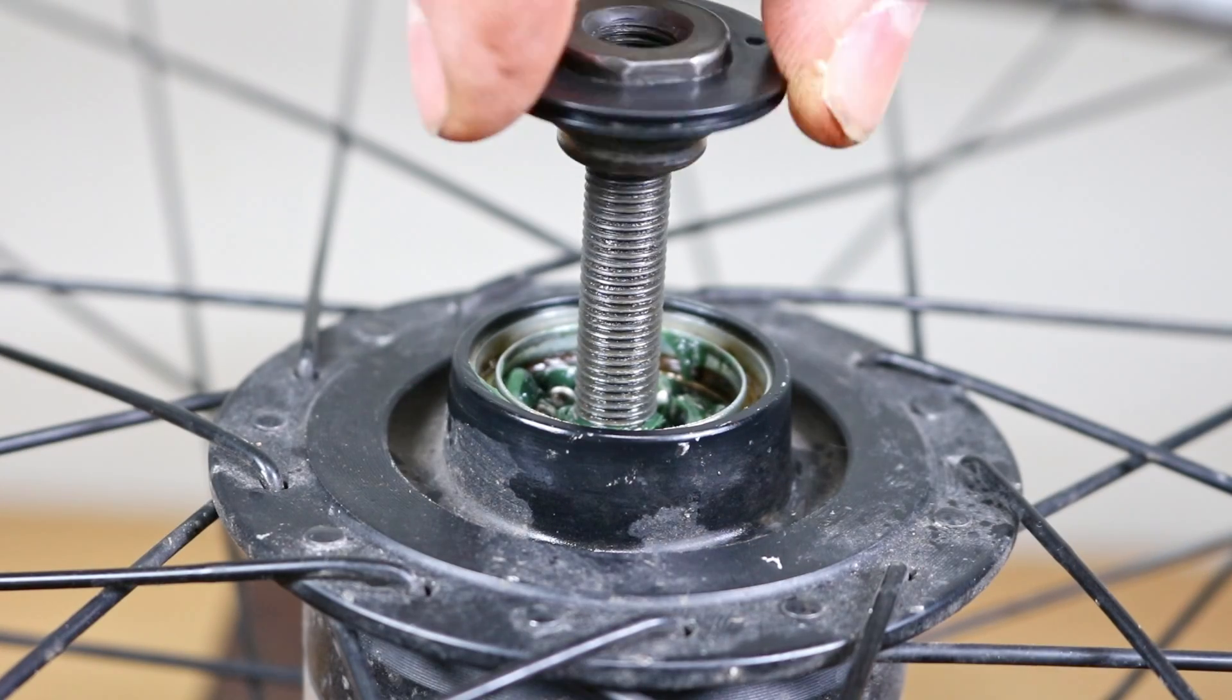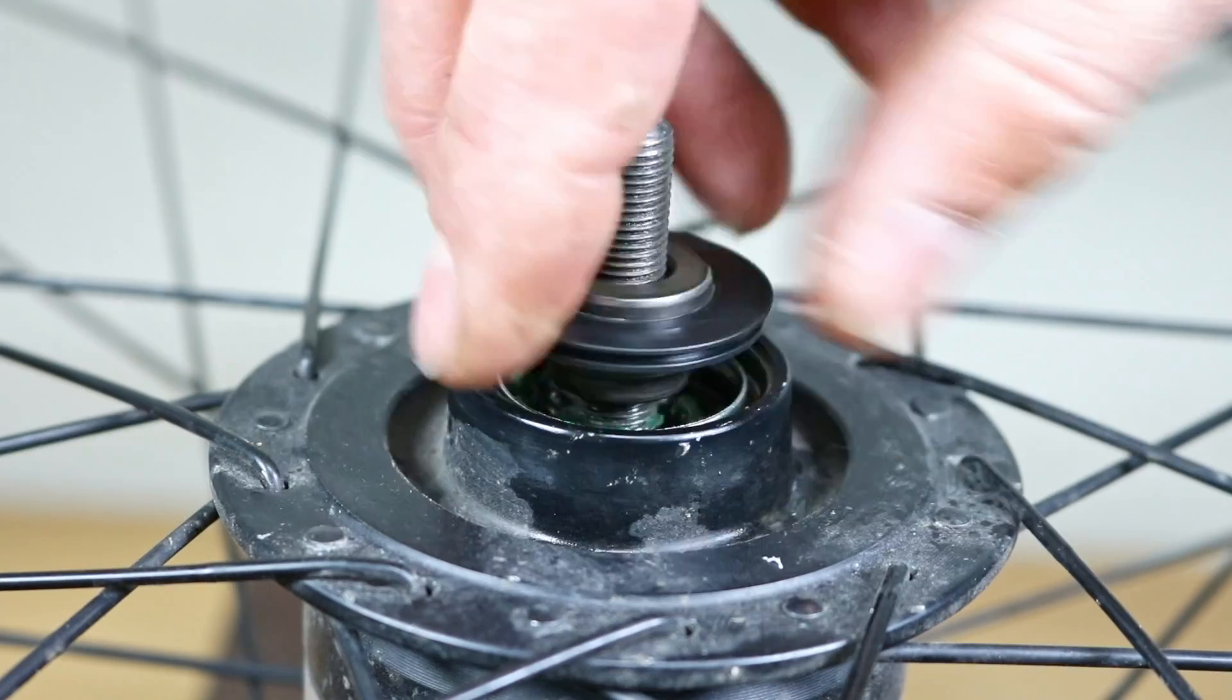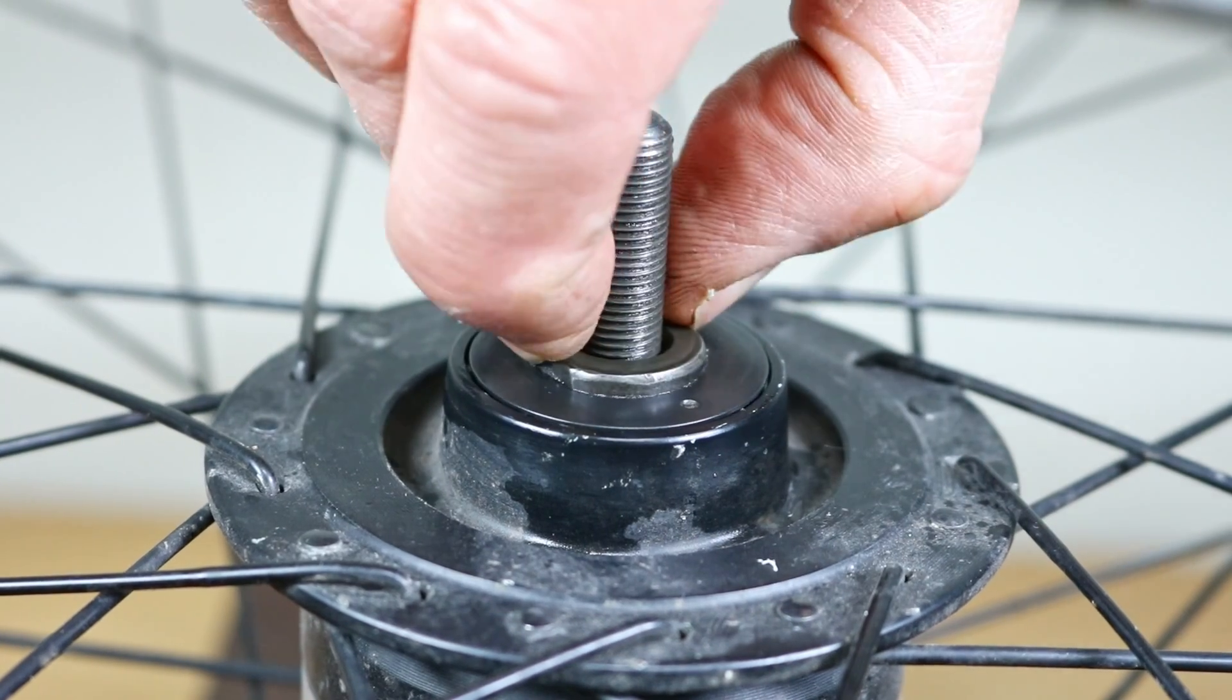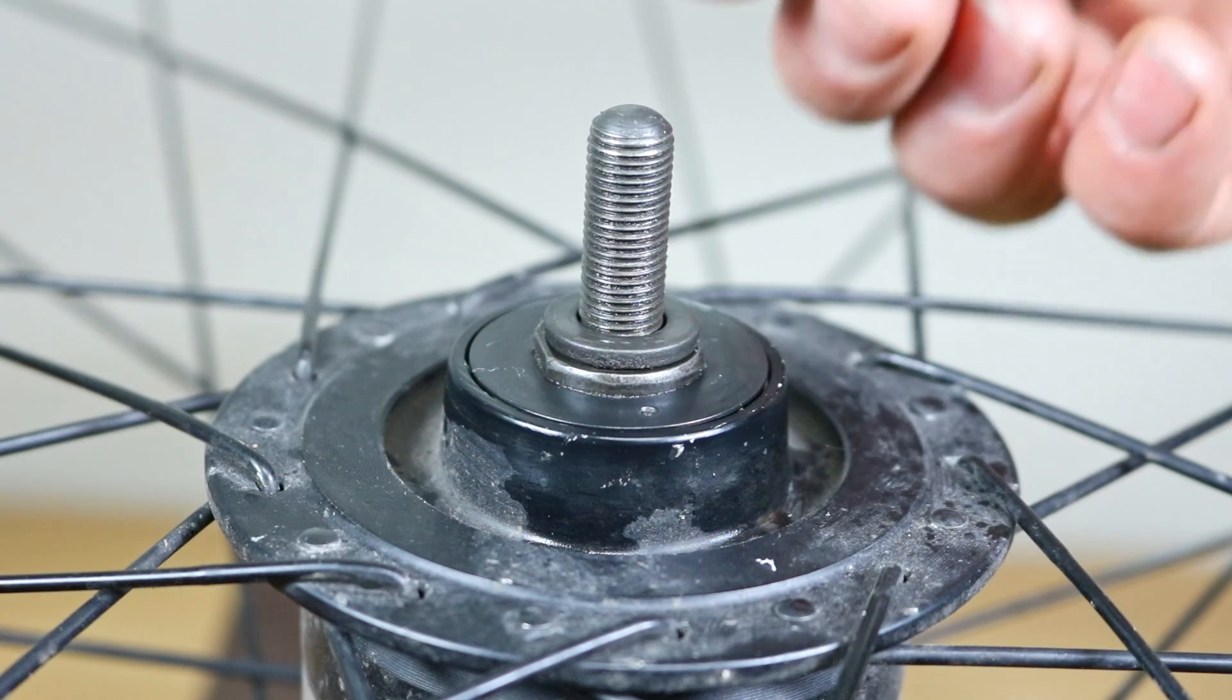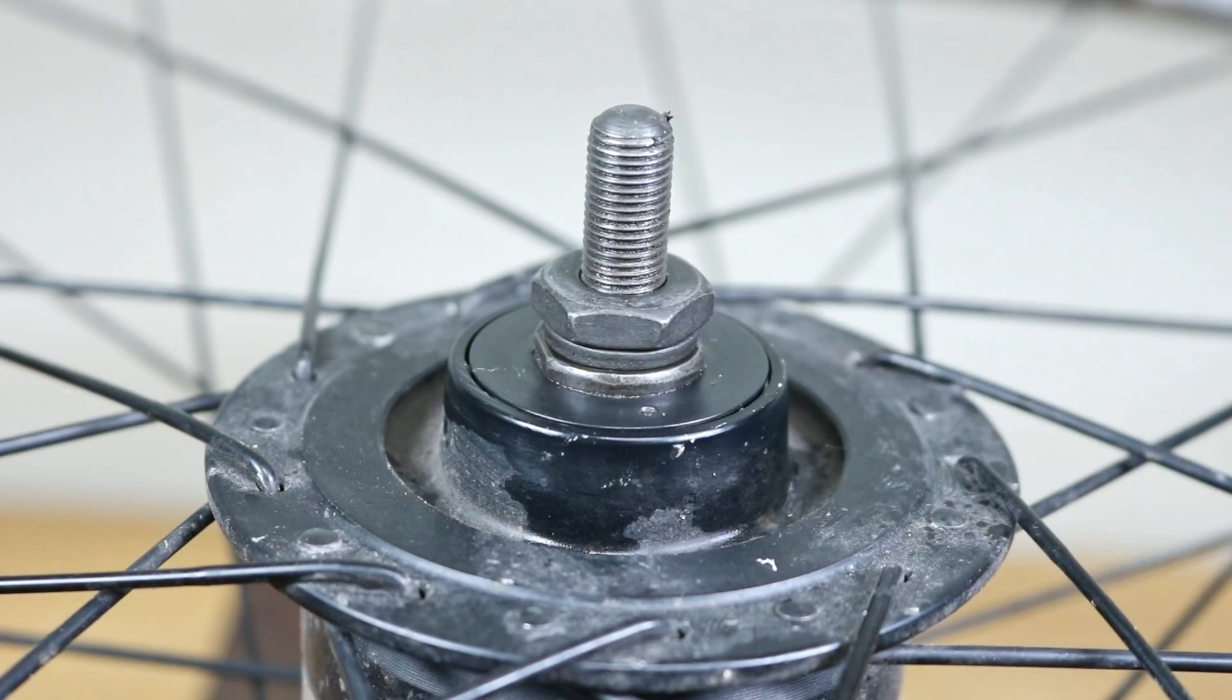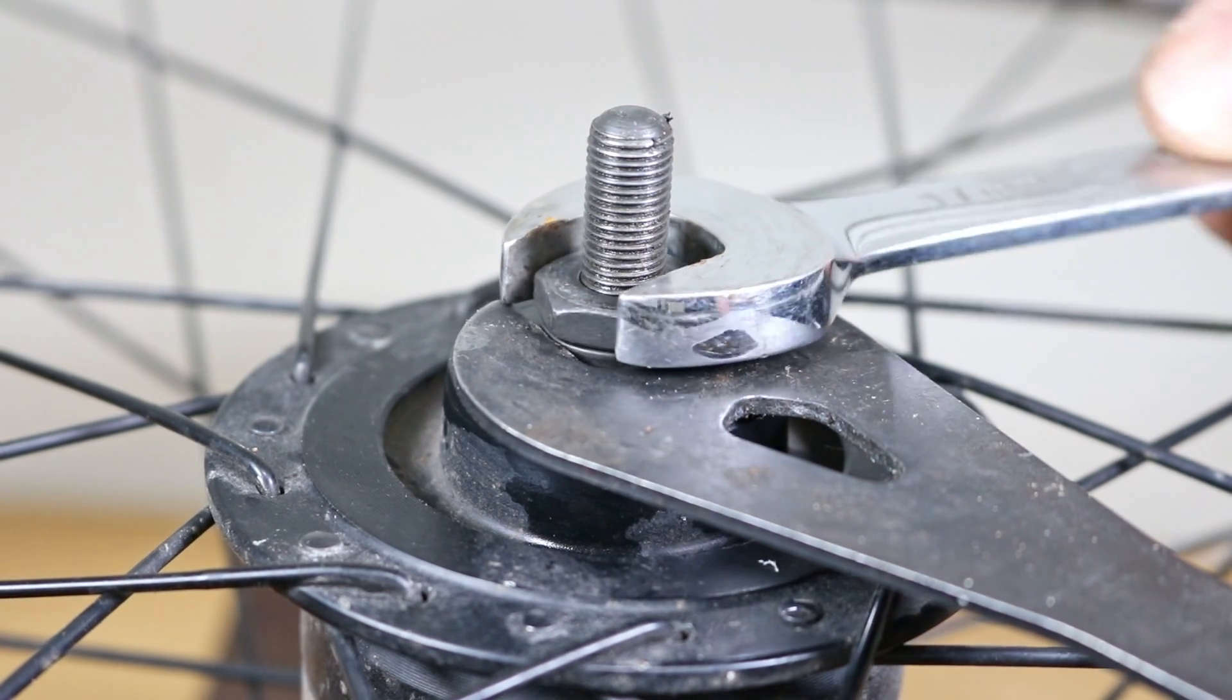Screw in the cone until it touches the bearings. Put back the spacer and the lock nut. Use the 17mm cone spanner to hold the cone in place and the 17mm spanner to tighten the lock nut clockwise.